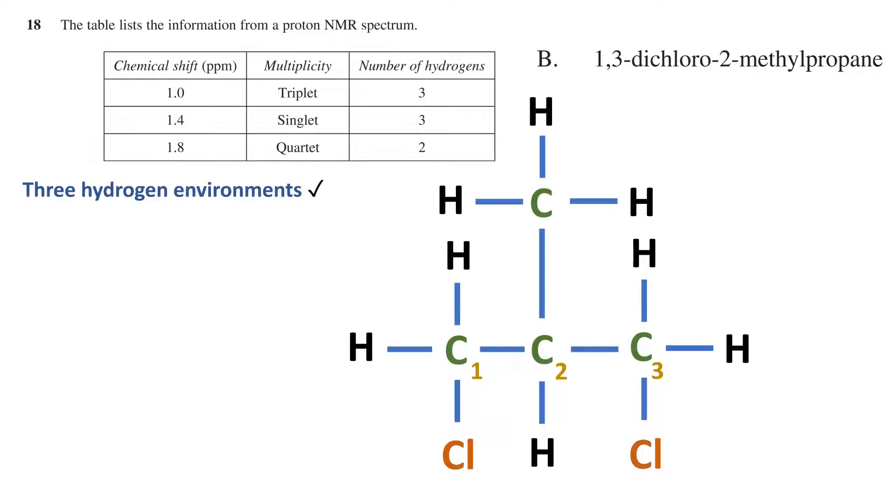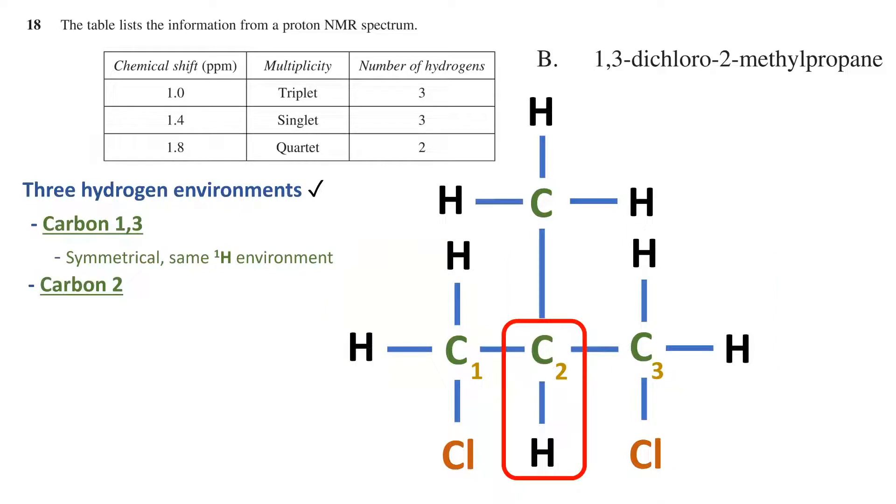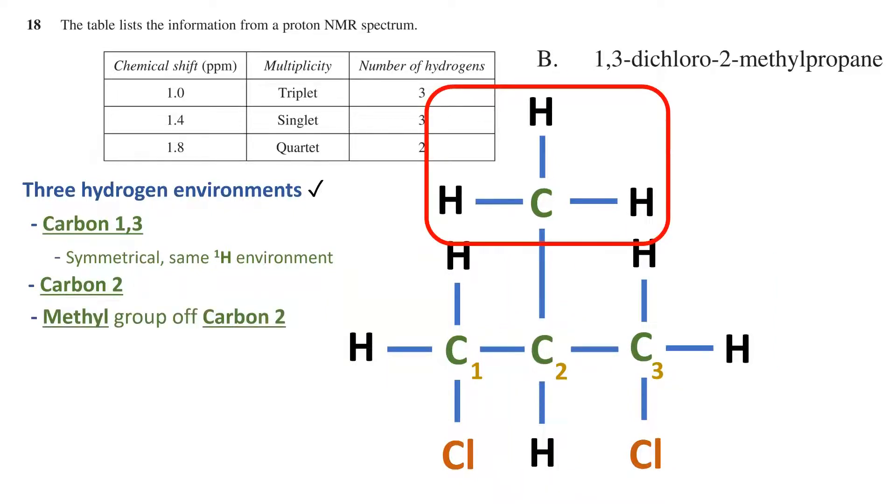Firstly, the hydrogens on carbons 1 and 3 are in identical environments. This is because the molecule is symmetrical around carbon 2. The next environment is the hydrogen off carbon number 2. And lastly, the hydrogens on the methyl group off of carbon 2 is the third hydrogen environment.